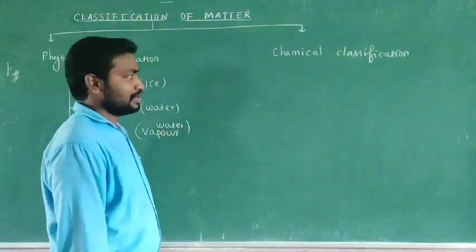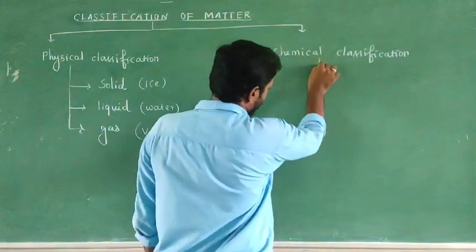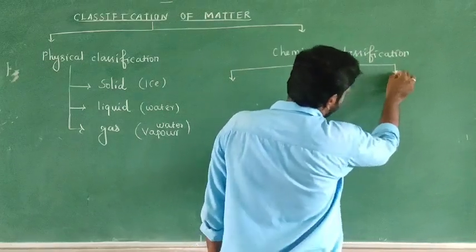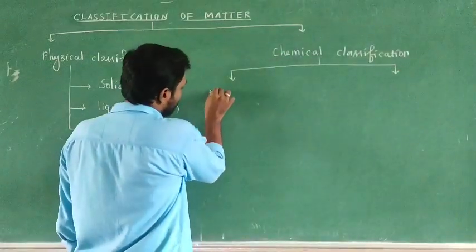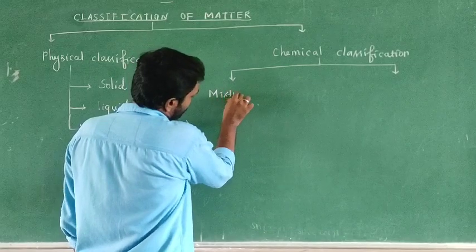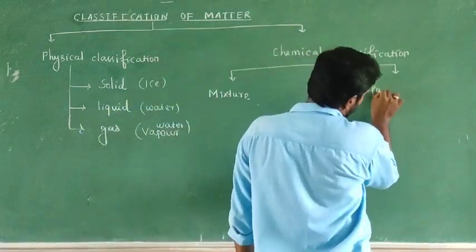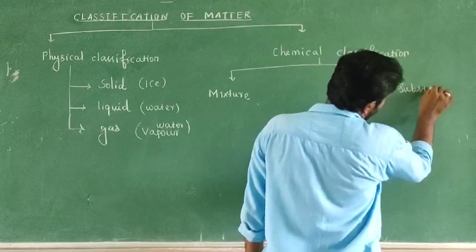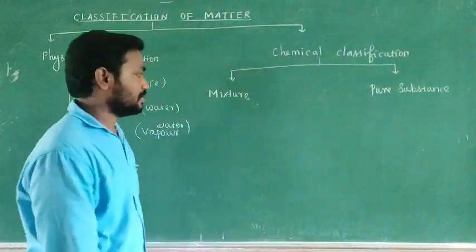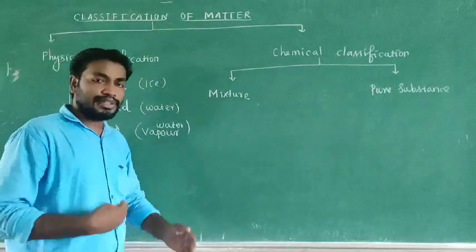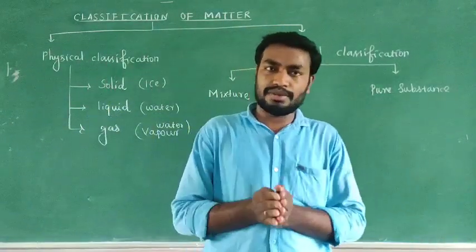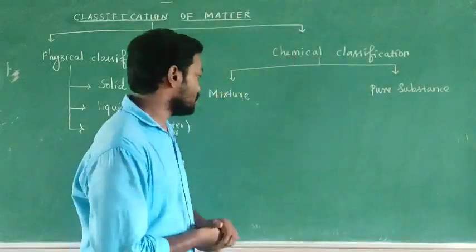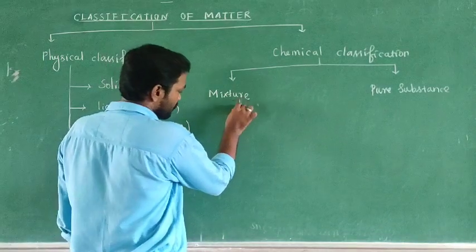Next we will cover chemical classification. Chemical classification has two types: mixture and pure substance. Mixture is more than one substance combined. Mixtures have two types of classifications.